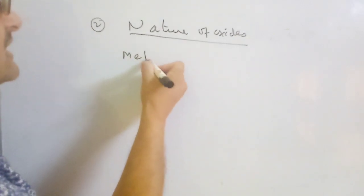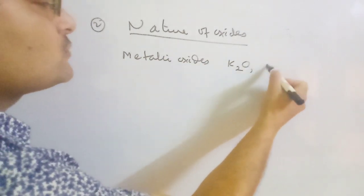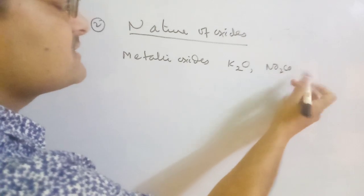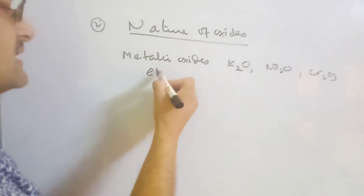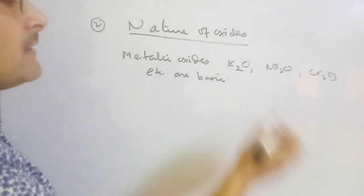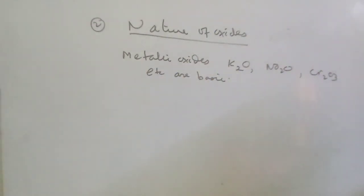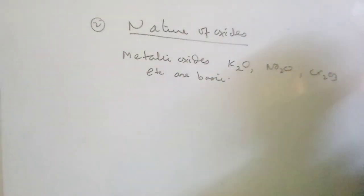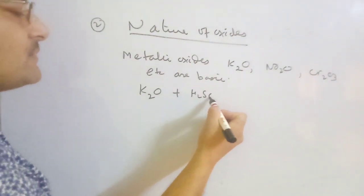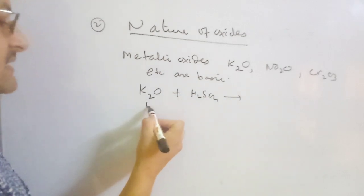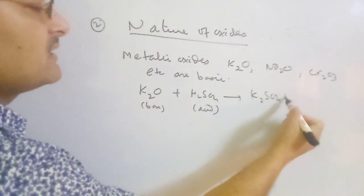When a reactant gives different kinds of oxides, you must know whether these oxides are acidic, basic, or neutral. Metallic oxides — like potassium oxide, sodium oxide, or chromic oxide — are basic. Basic oxides always react with acid to form salt and water. For example, if you have potassium oxide and H₂SO₄ — the base and acid react — it gives K₂SO₄ and water.